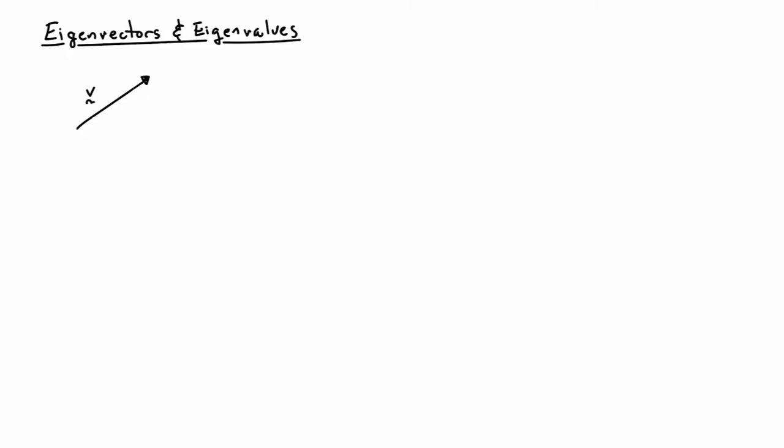I'd like to talk about eigenvectors and eigenvalues. These are special vectors and numbers that are associated with given tensors. I'd like to start with a vector v and consider what happens if I apply a tensor to it.